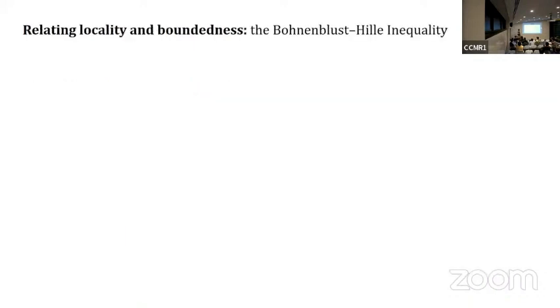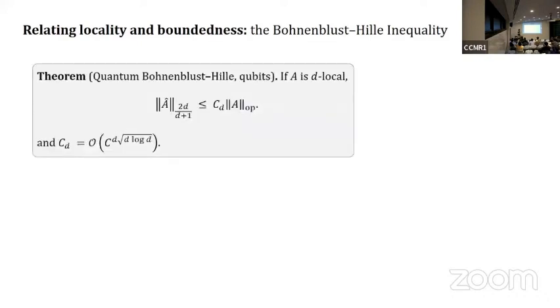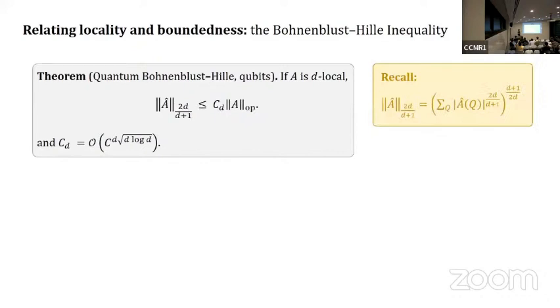So how could this be true? It comes down to an old inequality by Bohnenblust and Hille and actually a discrete version of it. We take a D local operator and consider a certain L^p norm of the Fourier coefficients. This is just explicitly what I mean by this L^p norm.